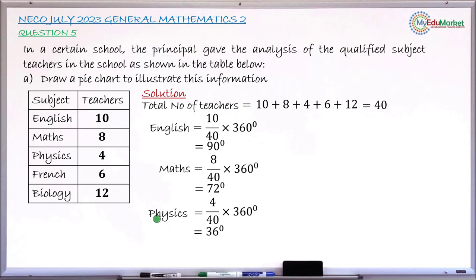So continue like that for French. If you do it correctly, it will give you answer 54 degrees. For Biology, if you do it correctly, it will give you answer 108 degrees. So these are the angles which I am going to represent on my pie chart.